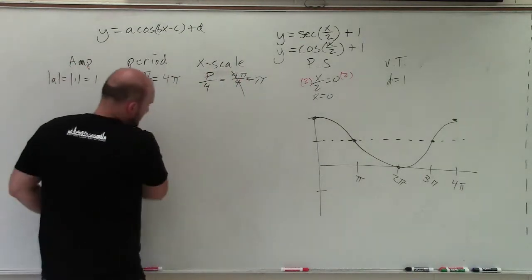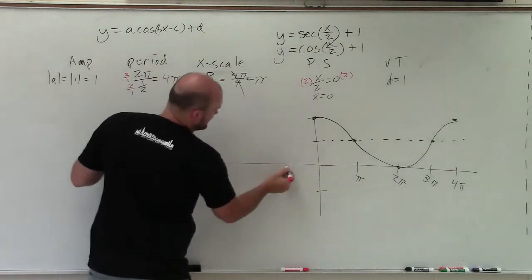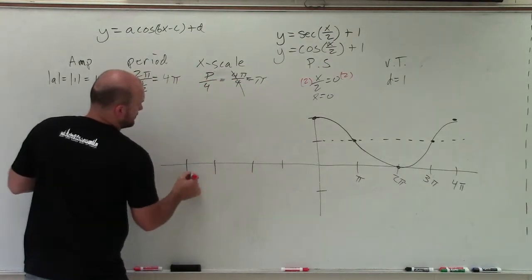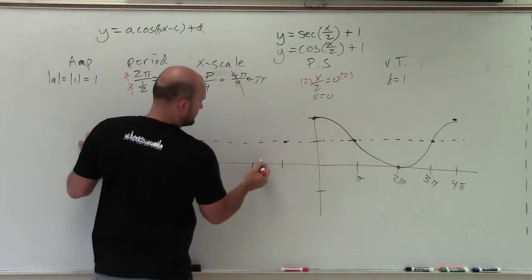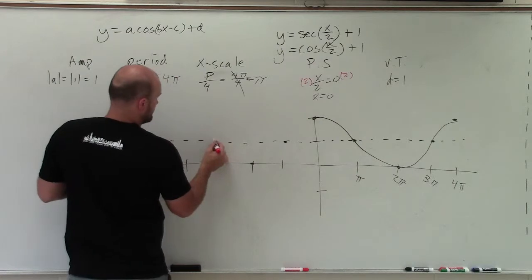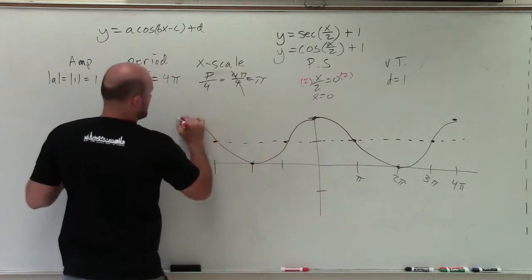Now, we've already graphed one period. Let's graph two periods. So I can graph a period in the negative direction. And all I'm going to do is just follow that exact same pattern.